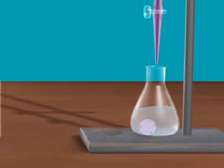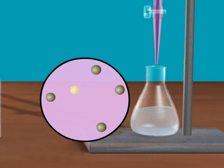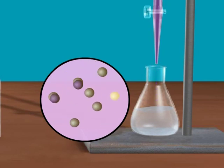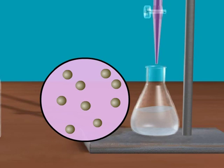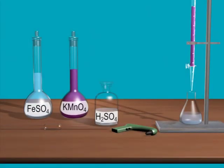Initially, unoxidized ferrous ions are present in the solution. When potassium permanganate solution contacts unoxidized ferrous ions in the conical flask, the purple color of potassium permanganate becomes colorless. At the end point, the solution in the conical flask turns purple due to complete oxidation of ferrous ions. In this titration, potassium permanganate solution acts as a self-indicator.